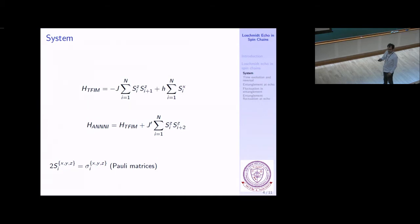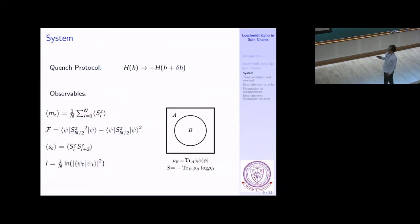The first one — the transverse Ising model — is an integrable system in one dimension, as many of us are familiar with from Jordan-Wigner and the usual treatment. But the second one, the 'any' model with next nearest neighbor coupling, is not integrable. The talk will involve varying this parameter j-prime and studying what it does.